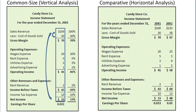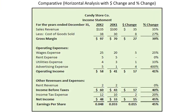In a horizontal analysis, users compare the account balance in one accounting period to the same account balance in a prior period to highlight positive and negative trends. Once users receive a comparative income statement like the one here, they will often import the numbers into a spreadsheet such as Microsoft Excel to compute additional values such as the dollar change and the percentage change in the accounts.